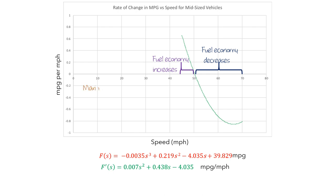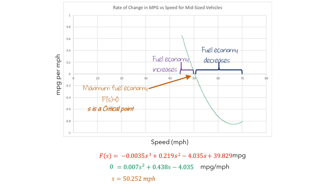When we switch from increasing to decreasing fuel economy, that's when we'll find the maximum fuel economy. This happens when the value of f'(s) is 0. When f'(s) equals 0, the value of s is called a critical point. To find the value of this critical point, we set f'(s) equal to 0 and solve for s using the quadratic formula or a computer. We get s = 50.252 miles per hour. So for these simulated cars, the fuel economy is maximized when traveling at 50.252 miles per hour.